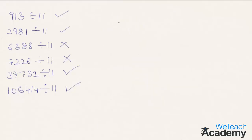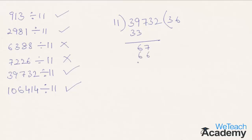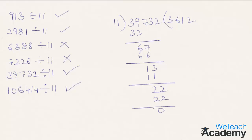Coming to the next number, 39732 divided by 11. 11 times 3 is 33, and 39 minus 33 is 6. Bringing down the next digit 7, we get 67, and 11 times 6 is 66. The difference is 1, and bringing down the next digit 3, it is 13. 11 times 1 is 11, we get difference 2. Bringing down the next digit 2, it is 22, and 11 times 2 is 22. So 22 minus 22 is 0, and the given number is exactly divisible by 11.